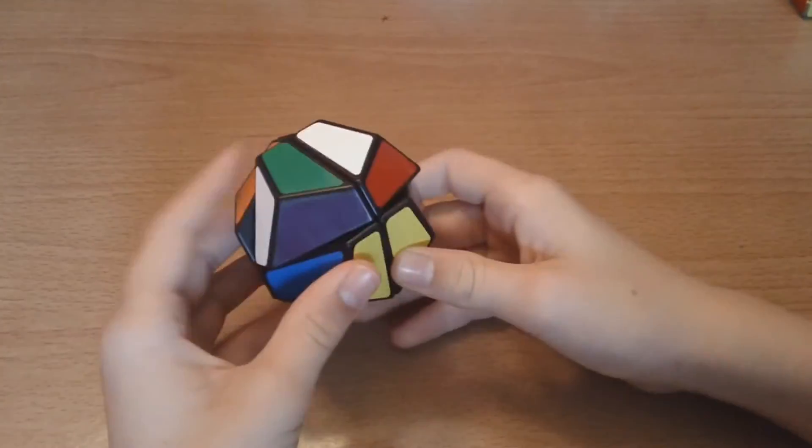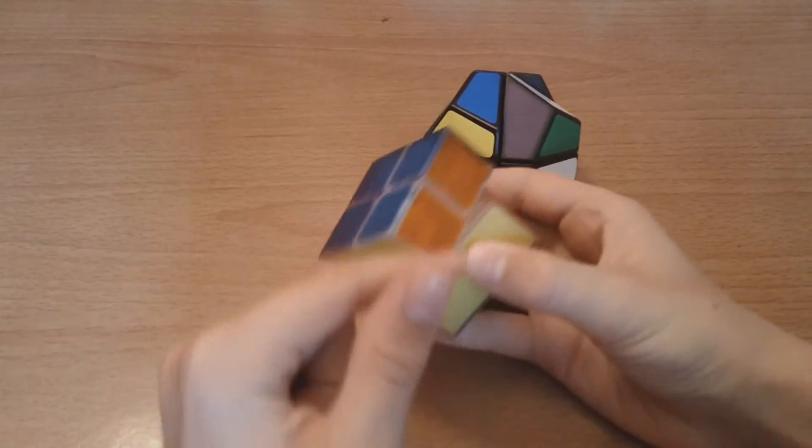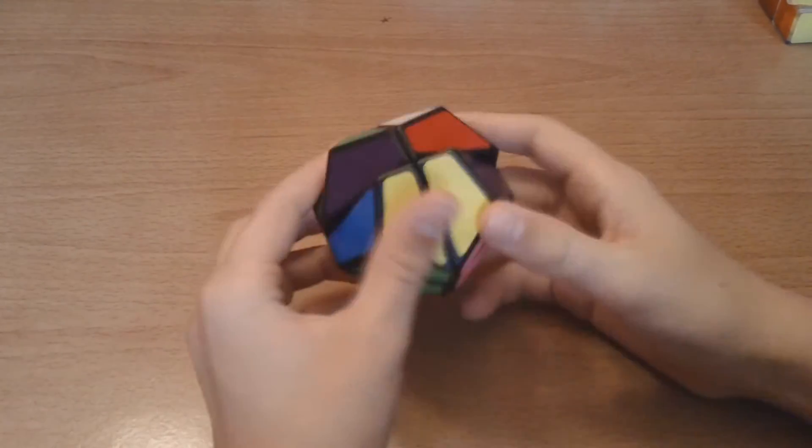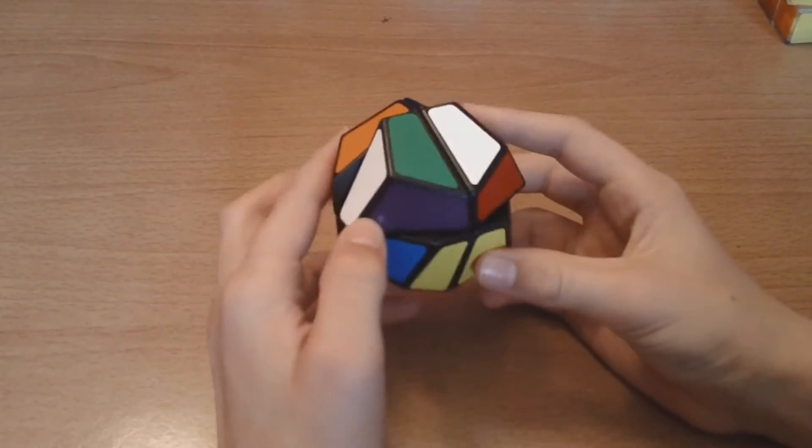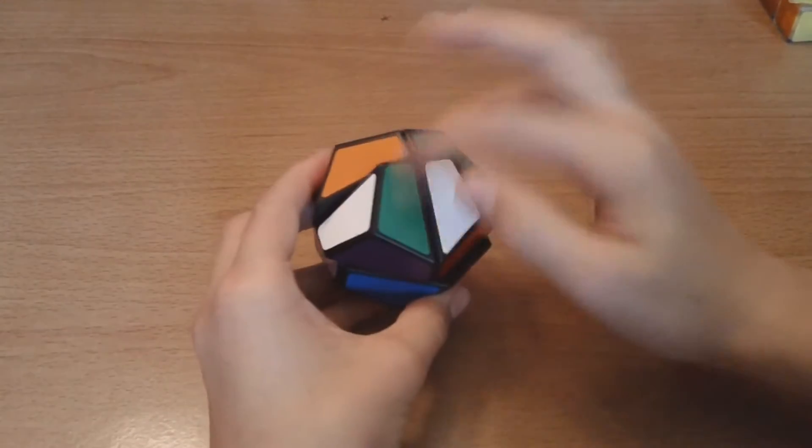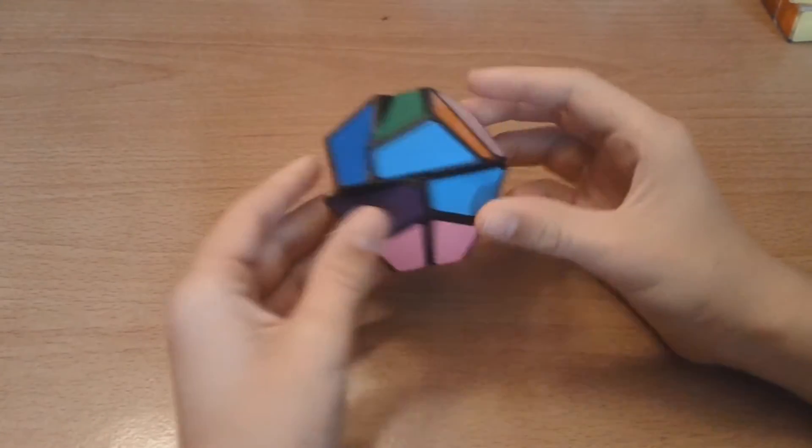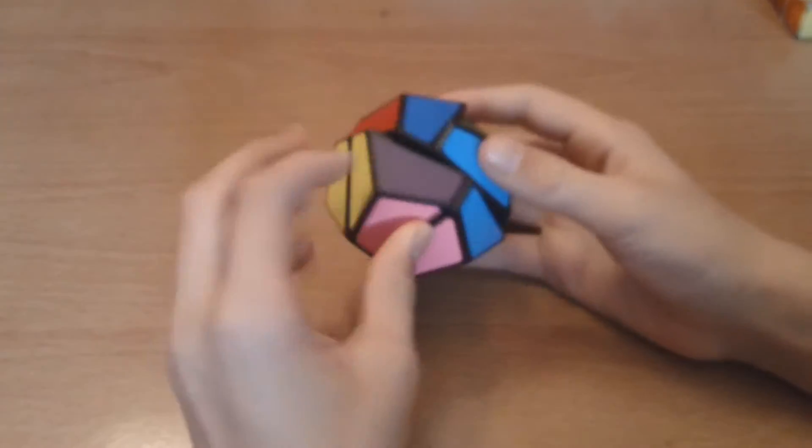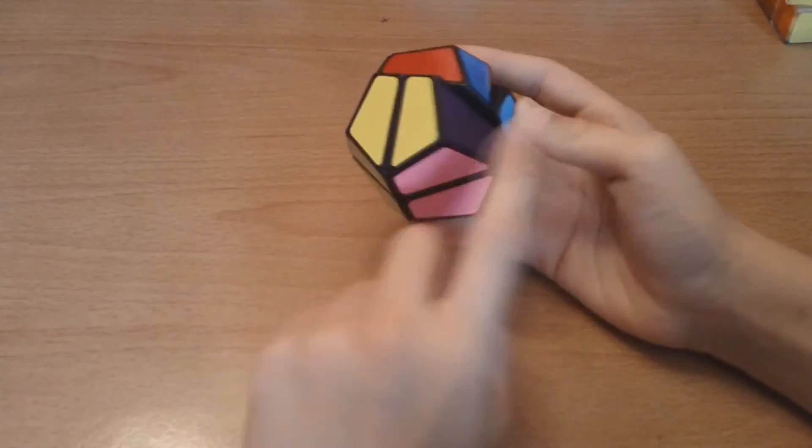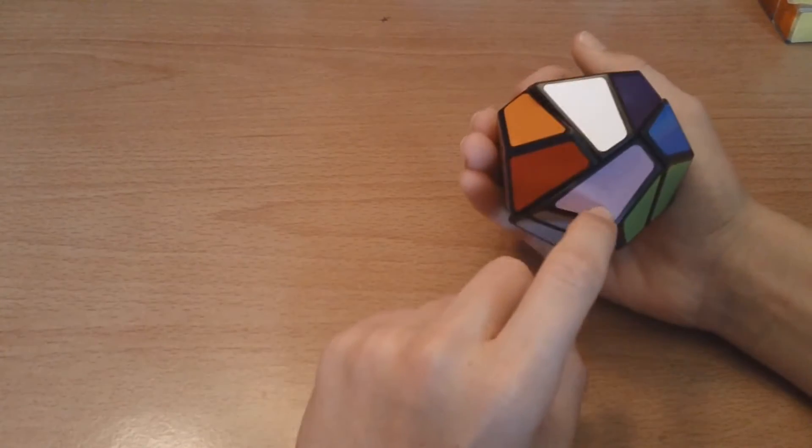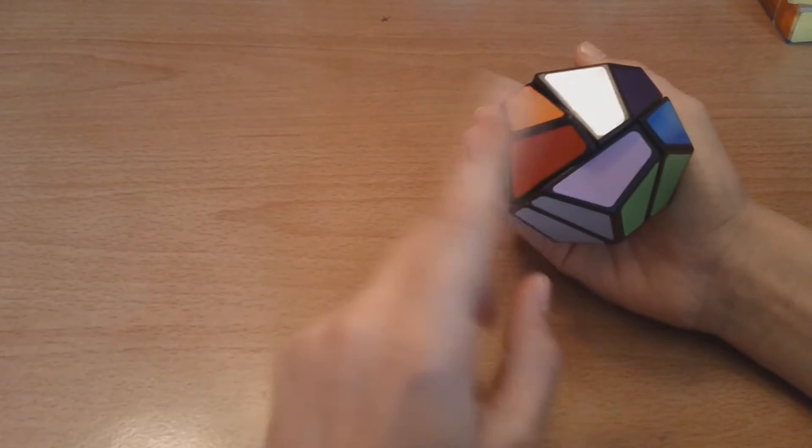You have your first layer solved, which is on the 2x2, you would have this whole first layer solved. Now, the next thing that we're going to do is we're going to match up or just put in place the top corners. So, we're going to look for a corner that has one of these colors. So, you have sky blue, purple, blue, and a light purple, violet.